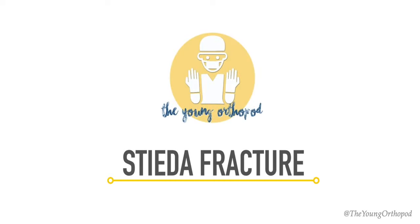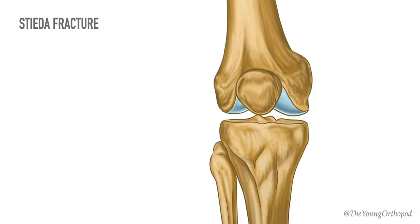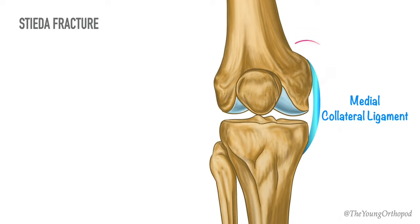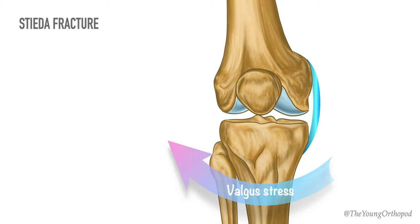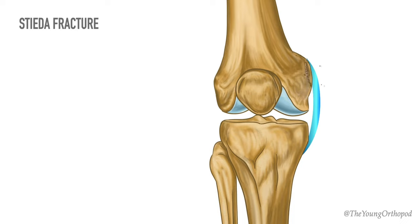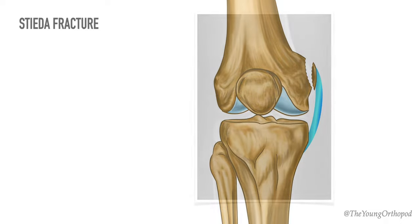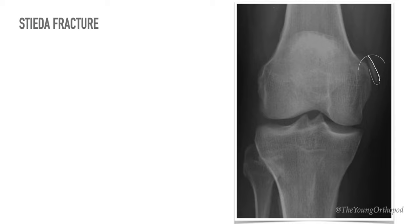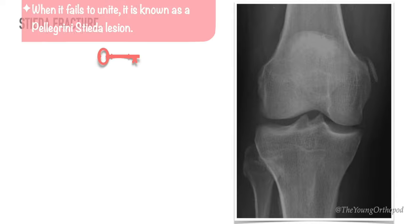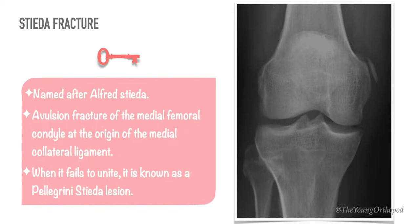Stieda fracture is an avulsion fracture of the medial femoral condyle at the origin of the medial collateral ligament. It usually results from excessive valgus stress on the knee. When it fails to unite, it is known as a Pellegrini-Stieda lesion. On radiographs, the avulsion fracture near the attachment site of the medial collateral ligament is usually characteristic. It is named after Alfred Stieda, who first described it.